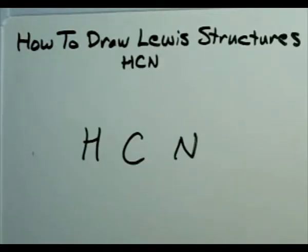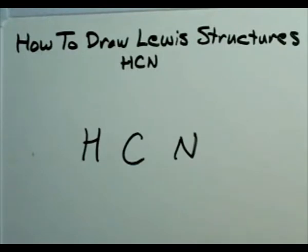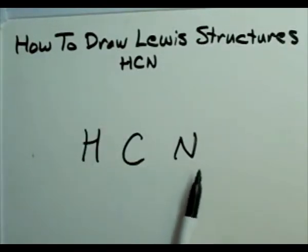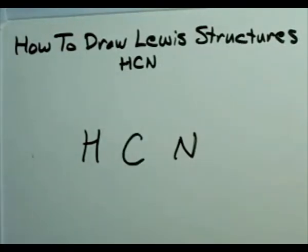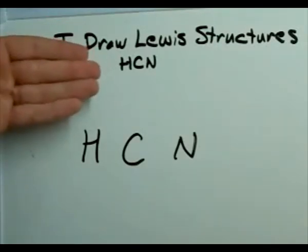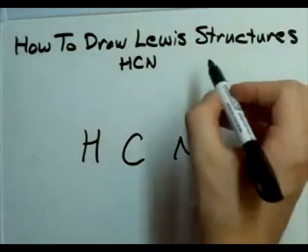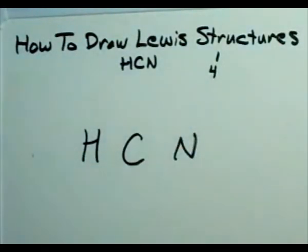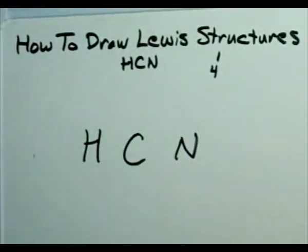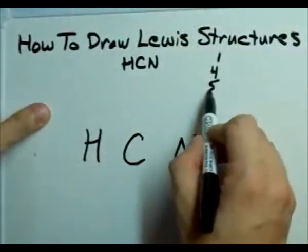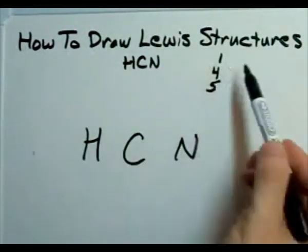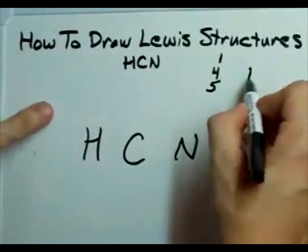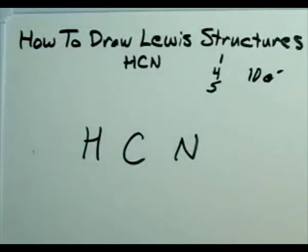In HCN, or hydrogen cyanide, step 1 is to draw the skeleton of the molecule — or how you think it may be bonded together. In this case it's pretty clear: we have a hydrogen, a carbon, and a nitrogen, written that way in the molecule for a reason. Step 2 is to count the number of valence electrons that HCN has. Hydrogen has 1 valence electron because it's in the first group. Carbon has 4 valence electrons because it's in the 4th group, if you don't count the transition metals. And nitrogen carries with it 5 valence electrons. In total, this molecule will have 1 plus 4 plus 5, or 10 valence electrons, which means we have 10 electrons to move around this molecule.